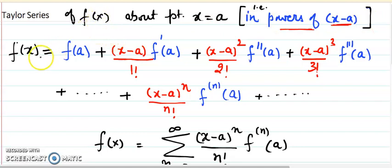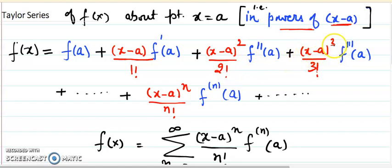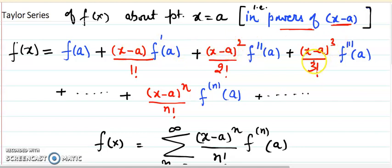The Taylor series of any function f(x) about a point a is: f(x) equals f(a) plus (x minus a) upon 1 factorial times f'(a), plus (x minus a) squared times f''(a) upon 2 factorial, plus (x minus a) cubed upon 3 factorial times f'''(a), and so on. We can see a pattern: first derivative with first power, double derivative with double power, triple derivative with triple power.